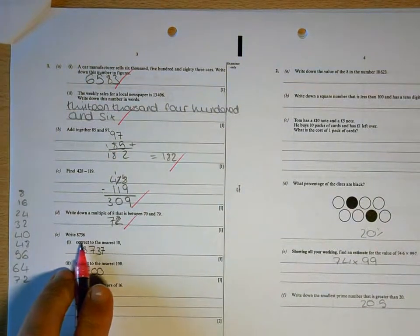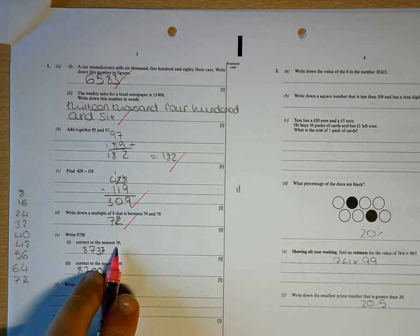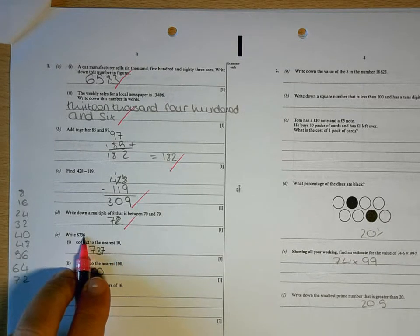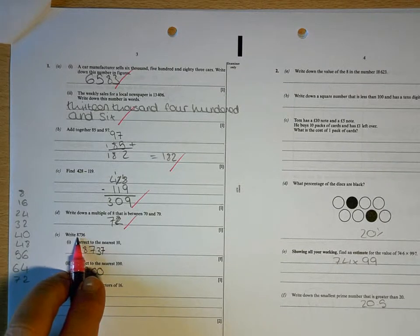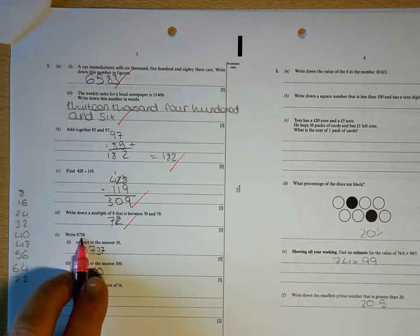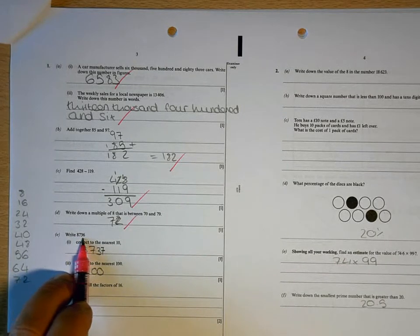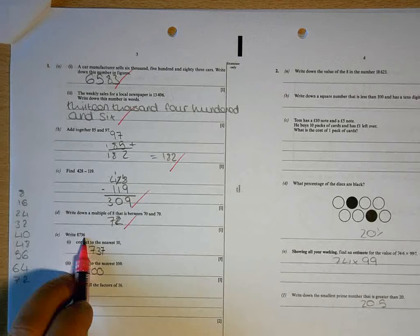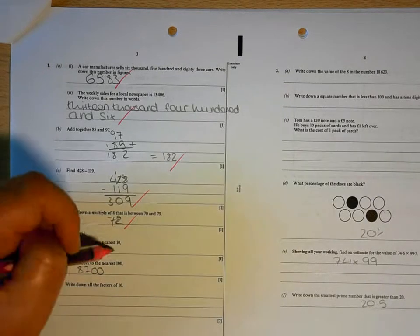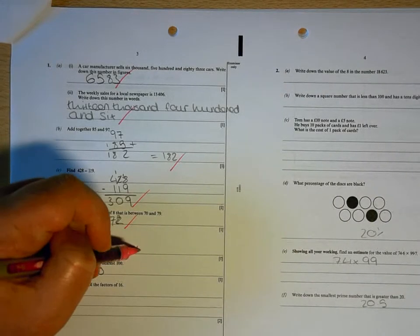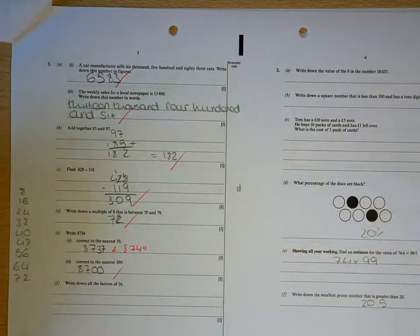Right, to round that to the nearest 10, that's the unit column, that's the tens column. So your answer is either going to be 8730 or 8740. Because it's 36, it's nearest to 40, so what you're looking for is 8740, that's correct.